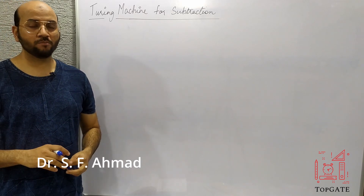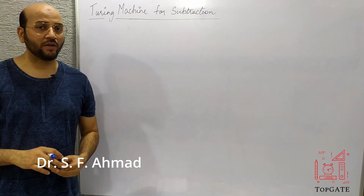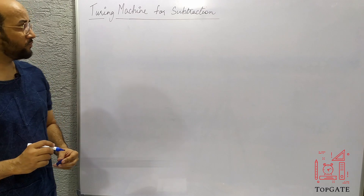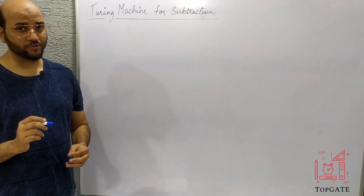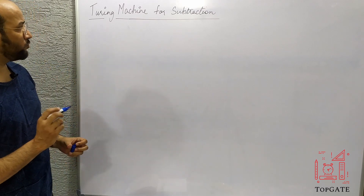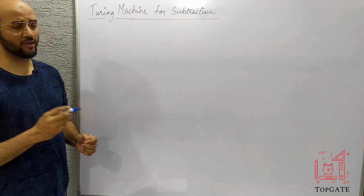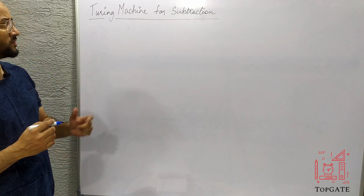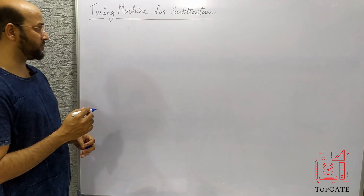Hello students, welcome to the channel TopGate. In this video I will discuss Turing machine for subtraction of two numbers. If we have two numbers, say 3 and 2, then how to do the subtraction of these two numbers with the help of the Turing machine.